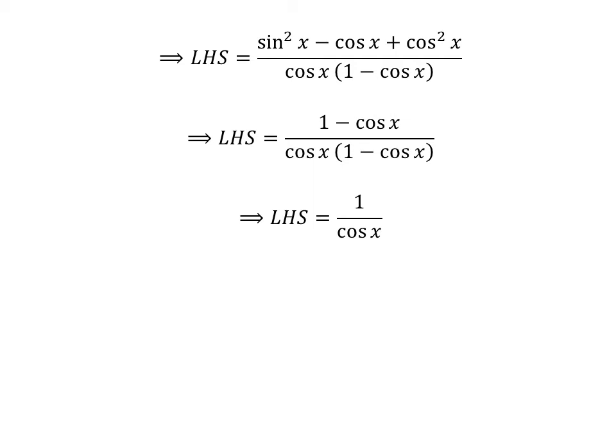Cancelling out the common factor 1 minus cosine of x in the numerator and the denominator gives us: the left hand side of the identity is equal to 1 upon cosine of x. We know 1 upon cosine of x is equal to secant of x. So, the left hand side of the identity is equal to secant of x, which is equal to the right hand side of the identity.